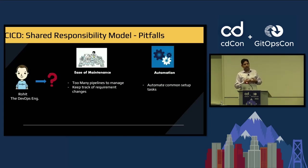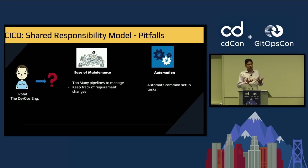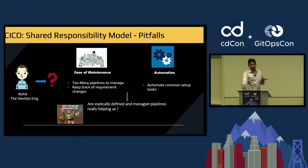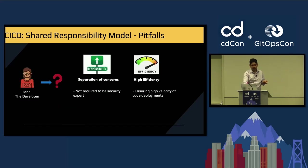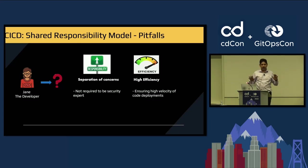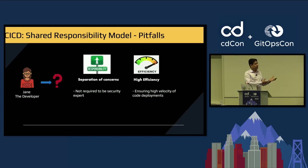Talking about the DevOps engineer: they need ease of maintenance and automation. How can they efficiently manage multiple pipelines? How do they keep track of requirement changes? How do they automate common tasks? Are these statically defined and managed pipelines really helping us? Today each project may have its own pipeline, pulling in its own tools — are they really helping? As a developer, I want to insulate myself from everything else. I just want to write code, fix bugs, and be done with it — nothing more, nothing less. How can I ensure a high velocity of code deployment? Now we'll talk about how we are solving that problem, and Sripad will take us through that journey.